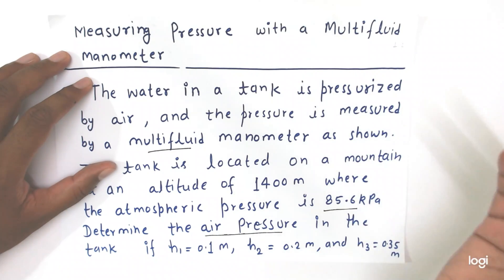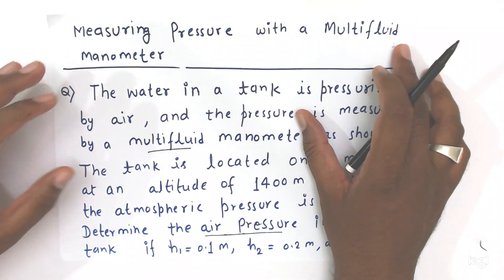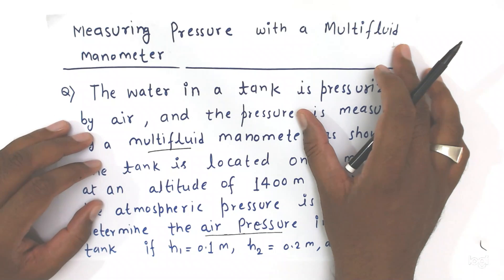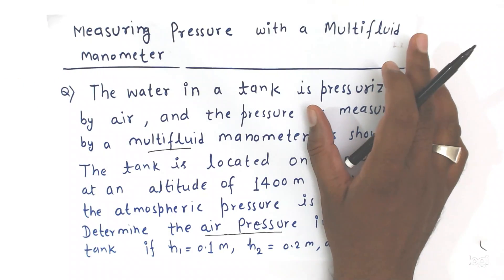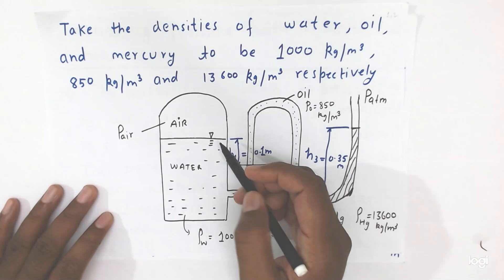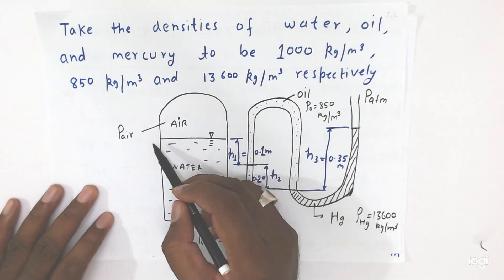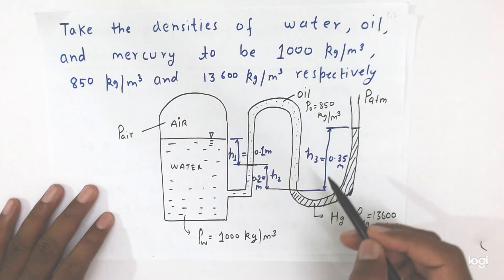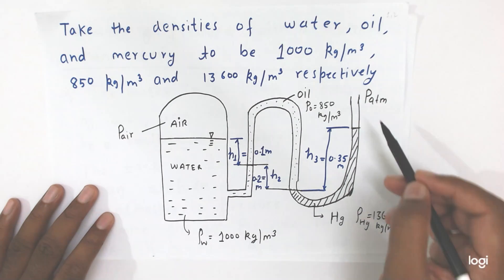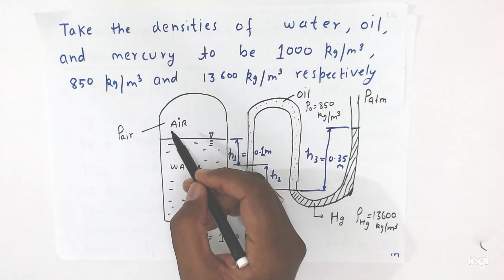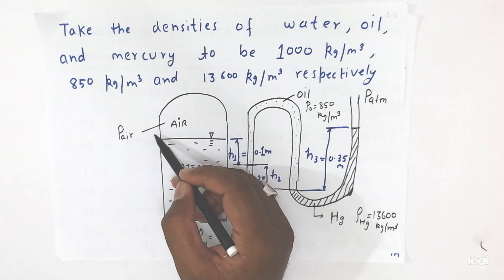When we take different types of fluids like water, oil, and mercury or even other fluids, how can we measure the pressure in the tank? Suppose here is the situation: you see the tank in which water is filled, air is being applied, oil is filled in one part, mercury has filled another part, and this part is open to atmosphere where atmospheric pressure is working. How will we calculate the pressure in the tank?